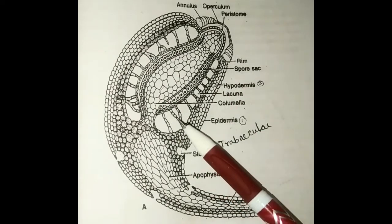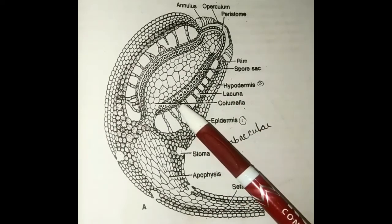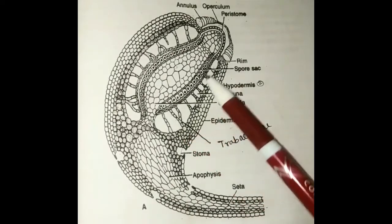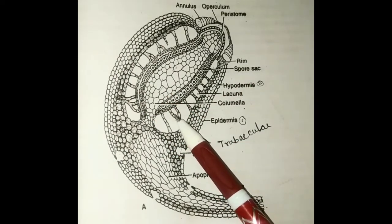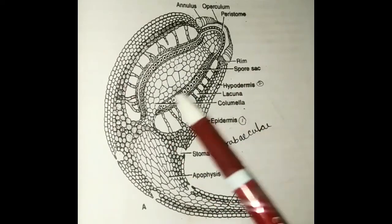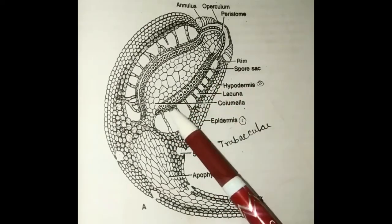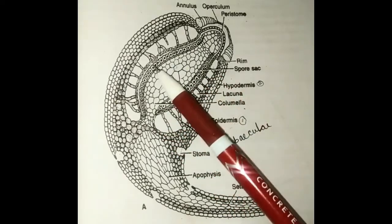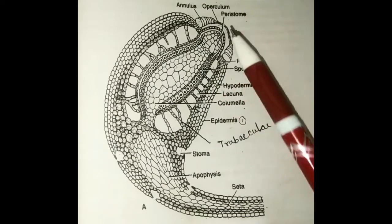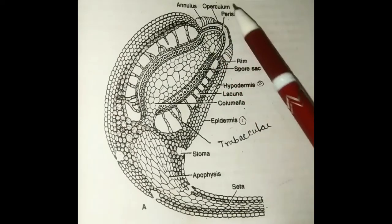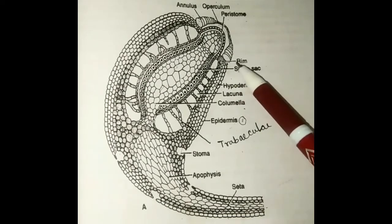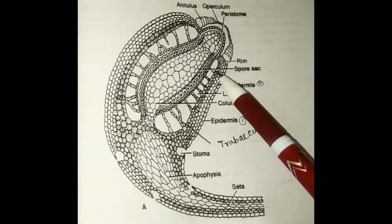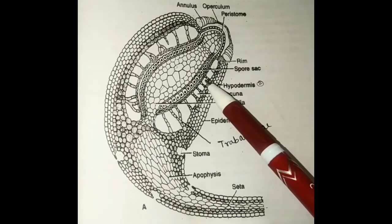Going inside, we get the spore sac — shown by dotted lines — arranged the same way on upper and lower layers. The middle portion is known as the columella, which is a parenchymatous sterile structure. On both sides of the columella are fertile cells present in the spore sac. In the upper portion there is the operculum which helps to open, and then there is the annulus — a ring-like structure. When the annulus and rim interlock, it will open and release spores.